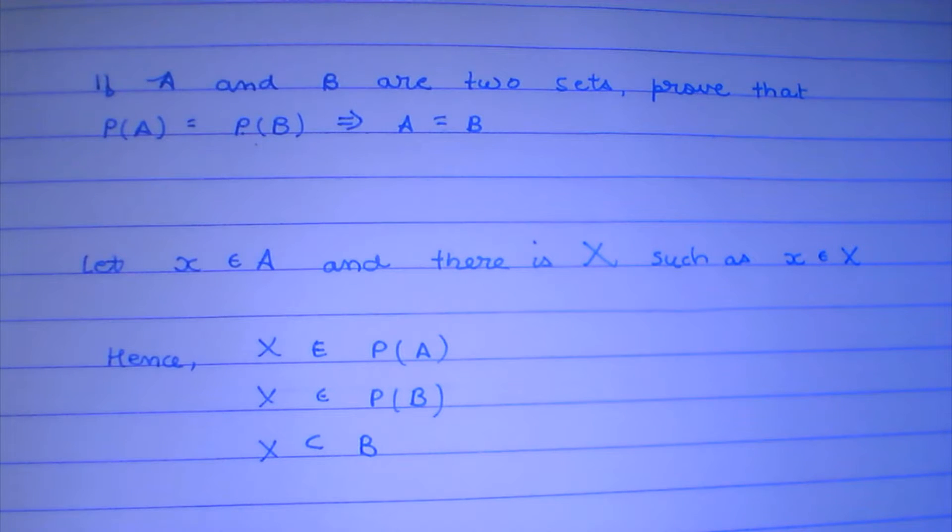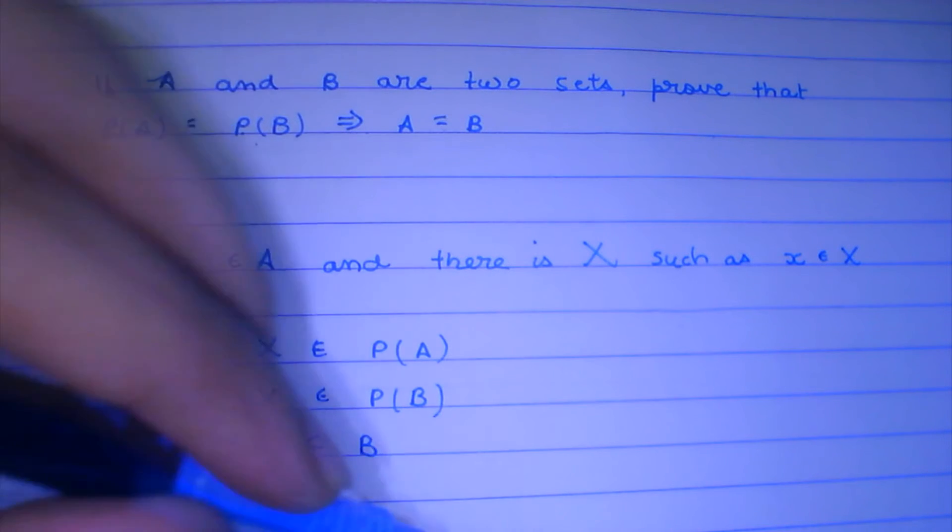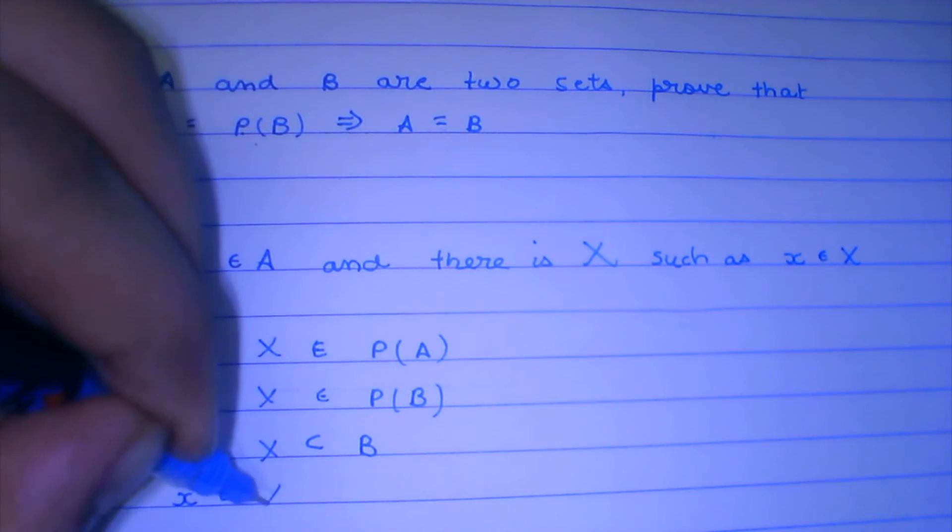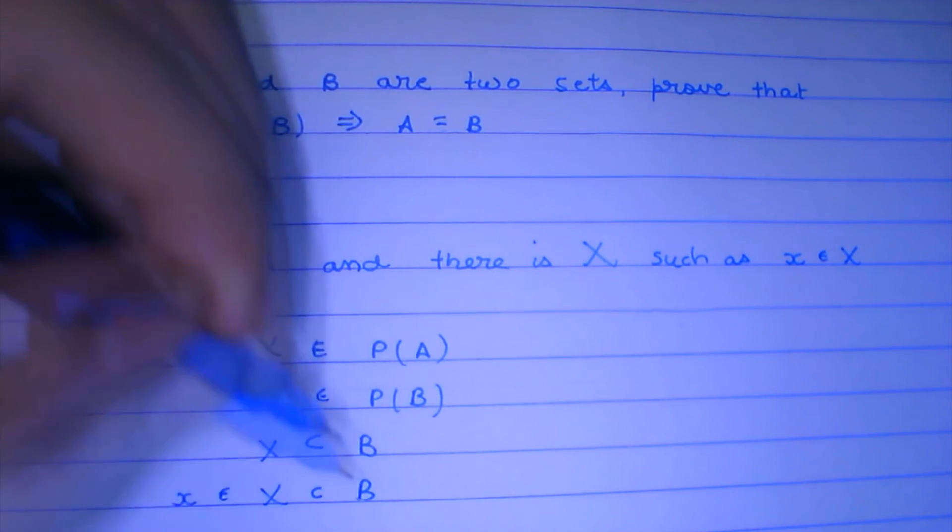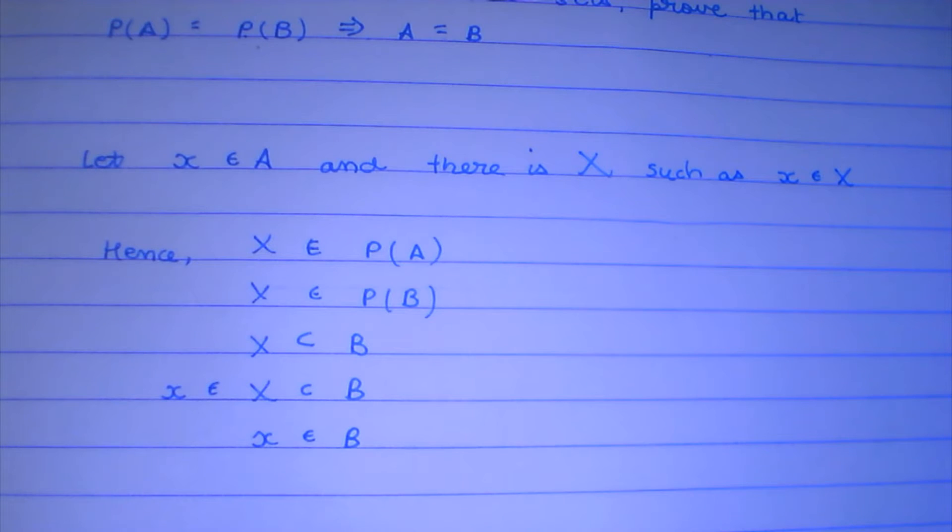If X is a subset of B, and this small x belongs to X, which is a subset of B, now if that's the case, x is also going to belong to B.